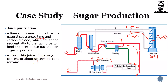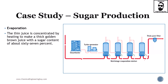A clear thin juice with a sugar content of about 16 percent is produced at this stage. Since we have water and sugar, we must remove the water, and the best way to do so is via evaporation. The thin juice is concentrated by heating in a multi-stage evaporation station to make a thick golden-brown juice with a sugar content of about 67 percent — very viscous, very dense, and very sweet. Water is removed both as condensate and as vapor, using steam from a boiler.